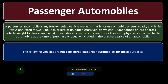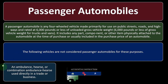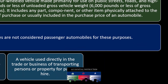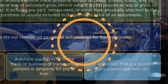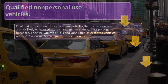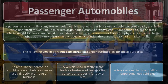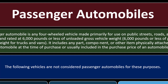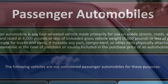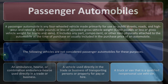The following vehicles are not considered passenger automobiles: ambulances and hearses used directly in a trade or business; vehicles used directly in the trade or business of transporting persons or property for pay or hire; and trucks or vans that are qualified non-personal-use vehicles. If you're trying to deduct as much as possible, you'd prefer not to be classified as a passenger vehicle, since that limits the depreciation you can deduct in earlier years. You'd rather be classified as a work vehicle, which typically allows more favorable depreciation methods.